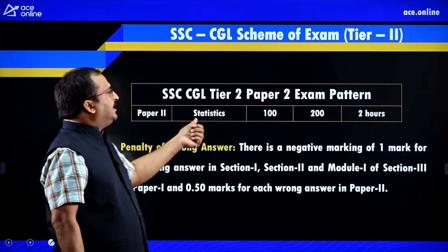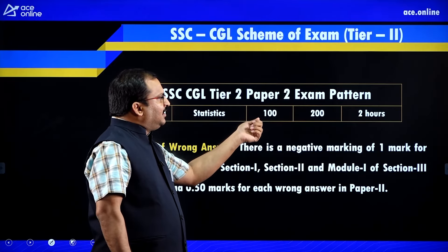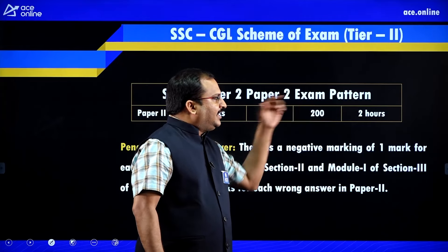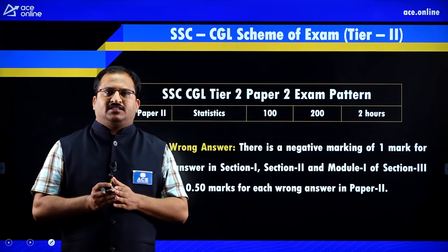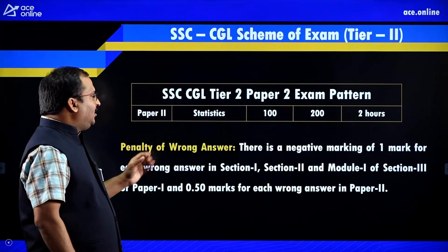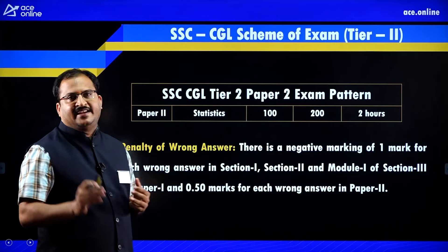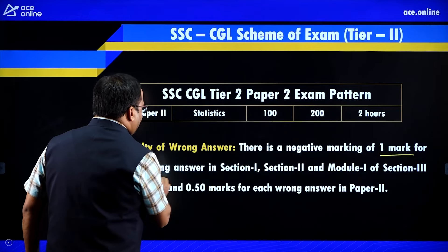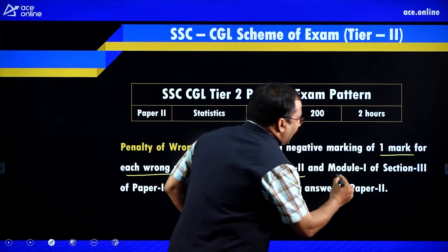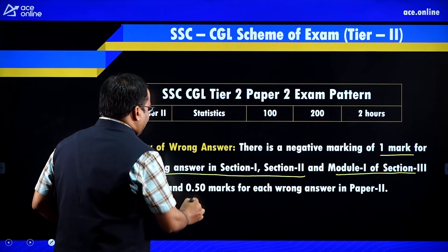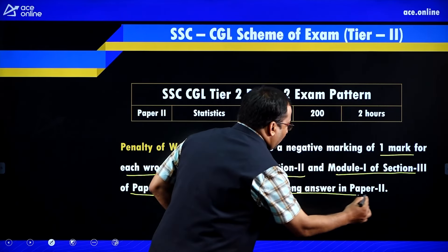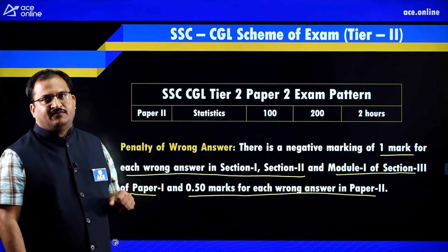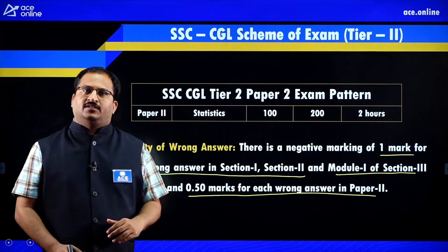Paper 2 contains statistics-related questions — 100 questions, each carrying 2 marks, for a total of 200 marks with a 2-hour duration. Negative marking for Tier 2: 1 mark for each wrong answer in Section 1, Section 2, and Module 1 of Section 3 of Paper 1, and 0.5 marks for each wrong answer in Paper 2. You should be very careful with speed and accuracy when solving problems.